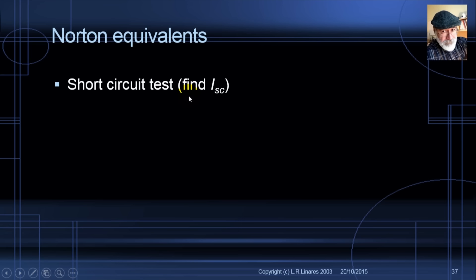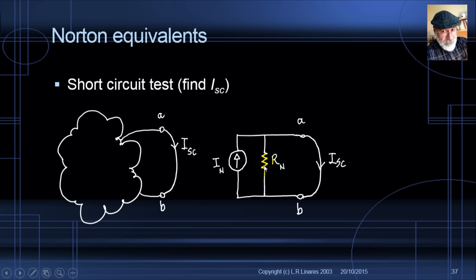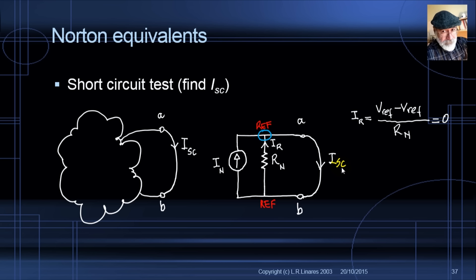We apply the same two tests. For the short circuit test: if this Norton equivalent is truly equivalent, the same short circuit current appears in both. In the Norton equivalent, the current through R_N is zero (it's an R-branch between the reference node and itself), so by KCL the short circuit current equals the Norton current I_N. Therefore, measure the short circuit current in the real circuit, and that value is the Norton current source.